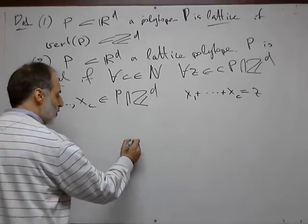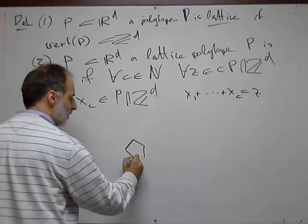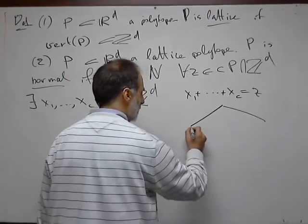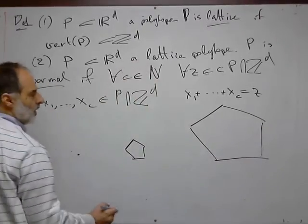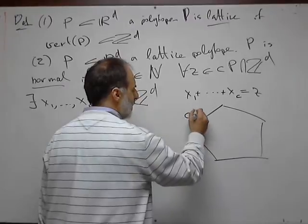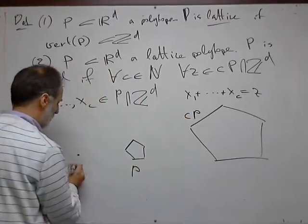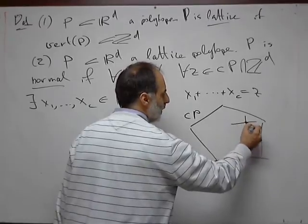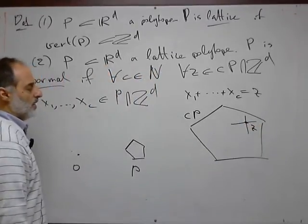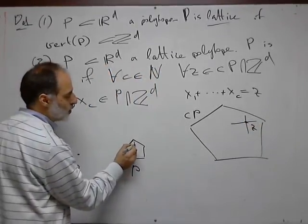So here is our polytope P, and c times P. The origin is somewhere. This is c times P, this is P, the origin. We pick any lattice point in c P and must decompose it into such summands.